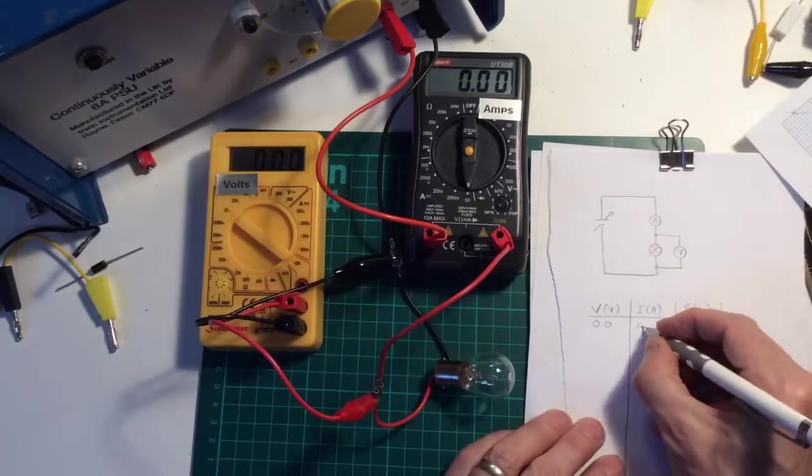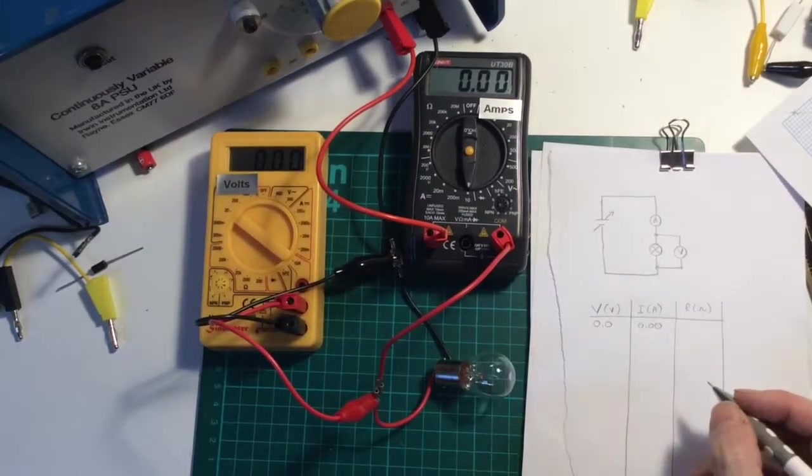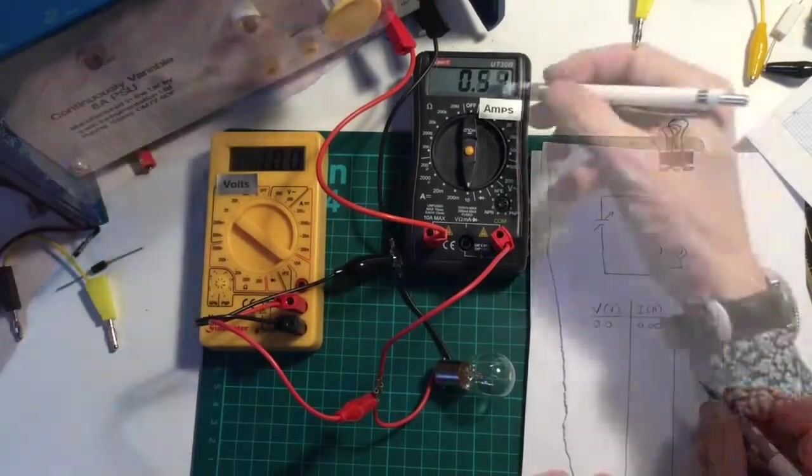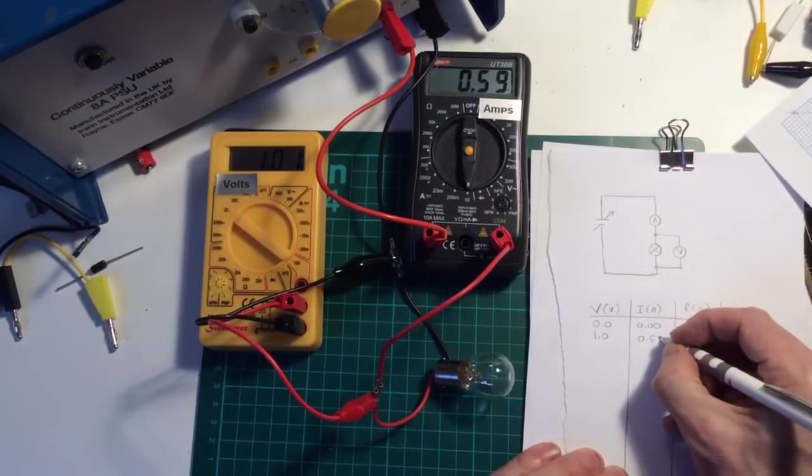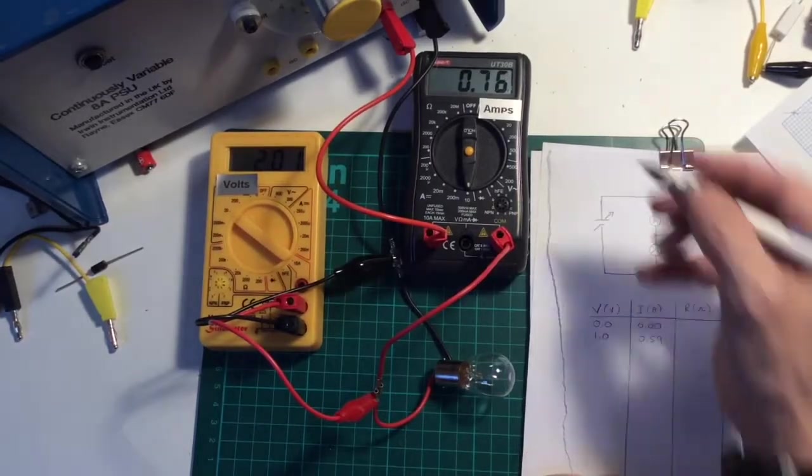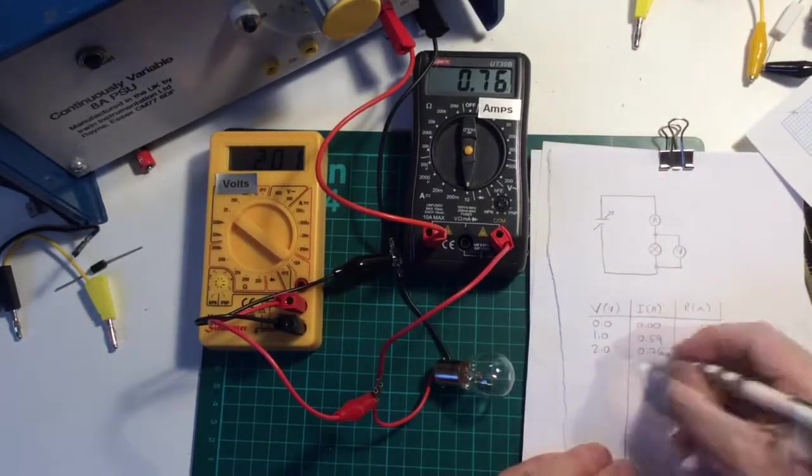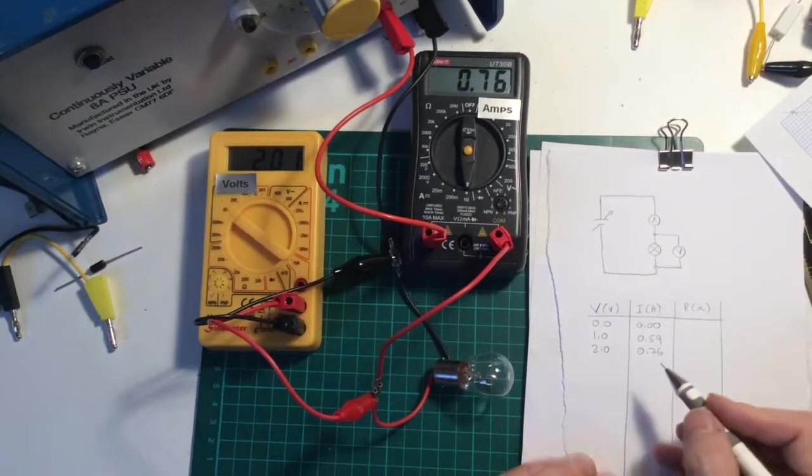So zero volts, I've got no amps, 0.00 amps. Let's go for one volt, 0.59 amps. Two volts, 0.76. And you notice the light bulb is starting to come on.